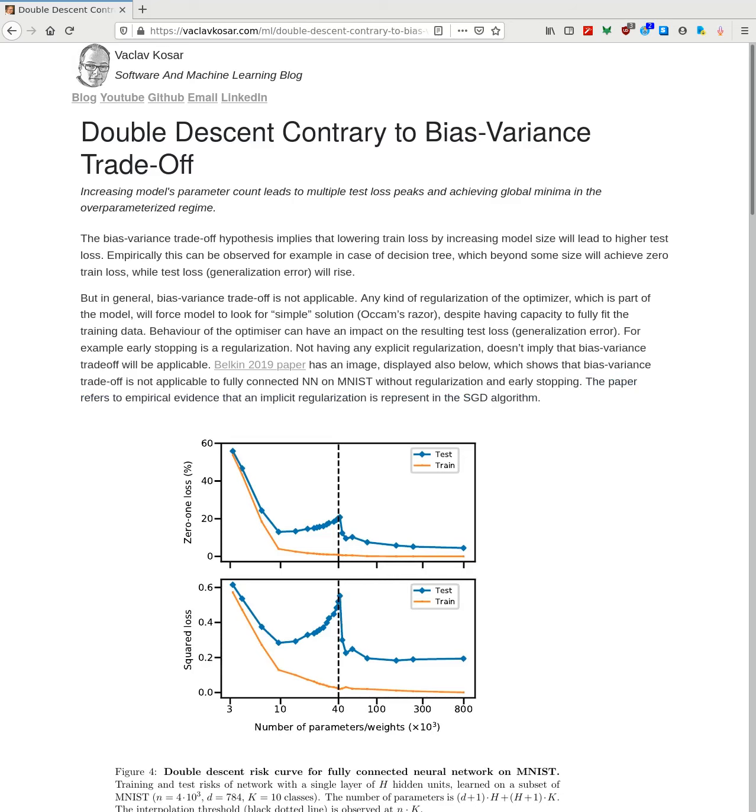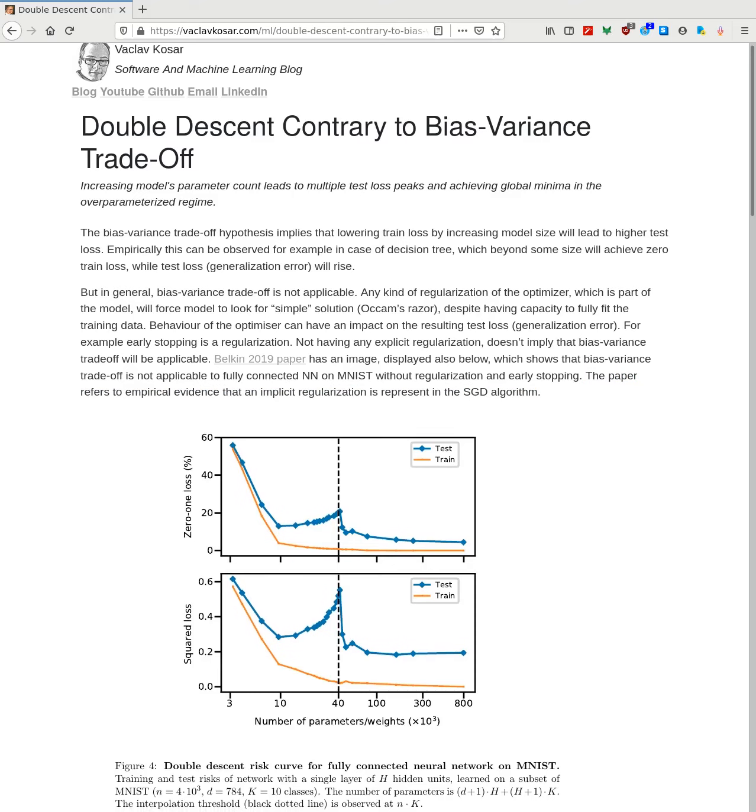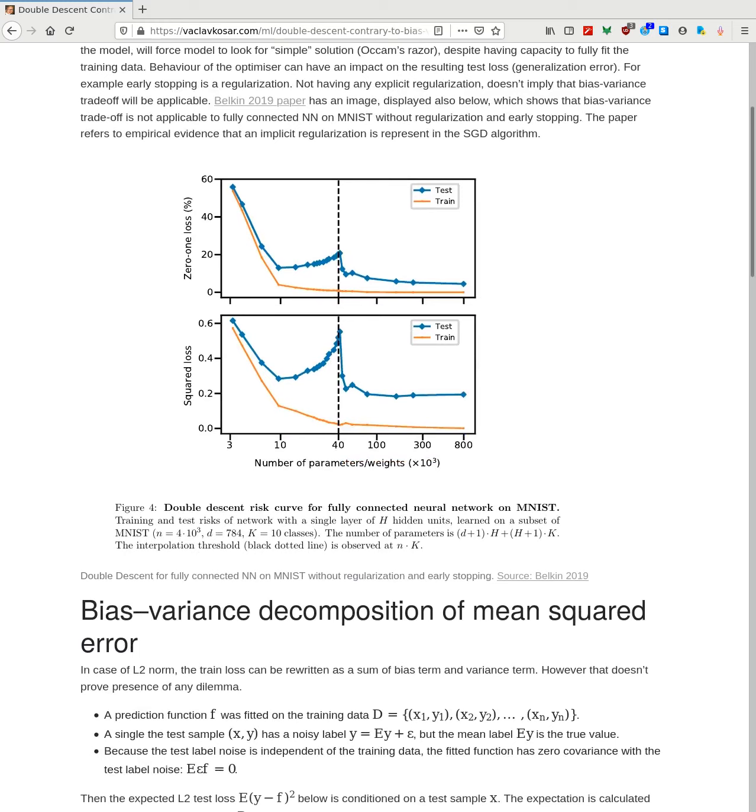The paper refers to an empirical evidence that implicit regularization is already present in the stochastic gradient descent algorithm. So they explain, all right, we have a fully connected network, we are running over-parameterized, but there is a regularization hidden in the SGD.